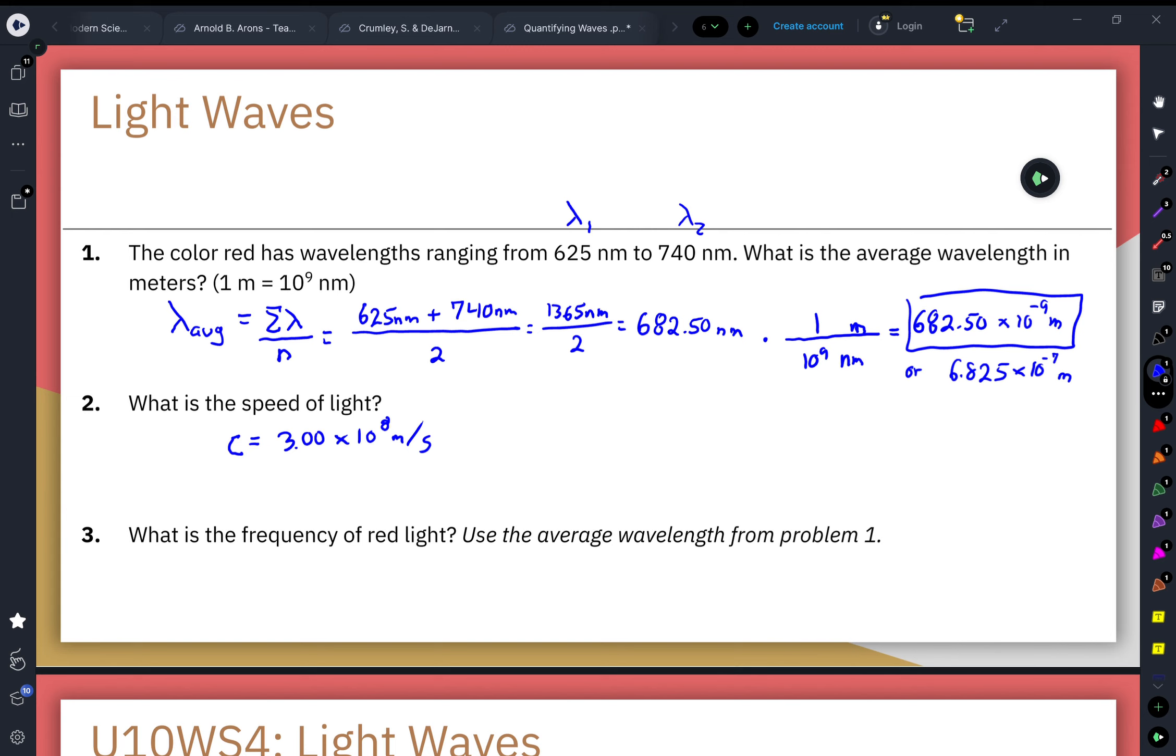Now finally, question three: what is the frequency of red light? So we have been using this equation: wave speed is equal to wavelength times wave frequency. When we're talking about EM waves, we can also write it as our constant speed of light is equal to wavelength times wave frequency.